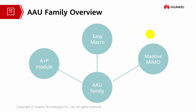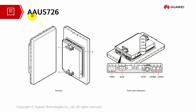This is the AAU family overview. The AAU family includes the A plus P module, easy macro with antenna and power module, and massive MIMO. An example is the AAU system of the 5726 5000 series, which looks similar to a book RRU concept but is slightly bigger because it is integrated with both the RRU unit and the antenna unit.